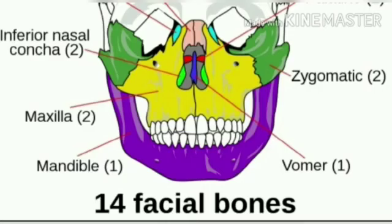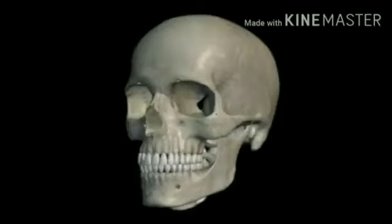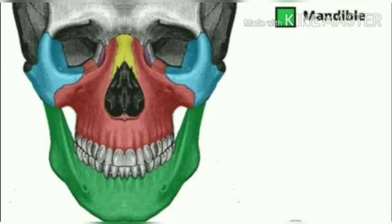These eight bones are known as cranial bones. The face consists of 14 facial bones and forms the lower part of the skull. All these bones are immovable or fixed. Only the lower jaw bone is movable. Teeth are present on both the lower jaw and the upper jaw, and the face has two sockets for the eyes.